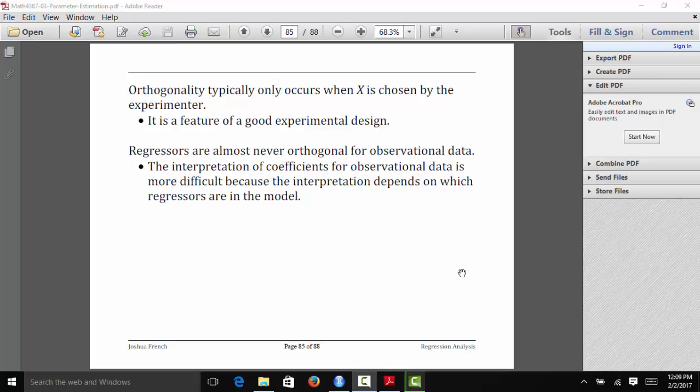Orthogonality only occurs when X is chosen by an experimenter. It never really happens for observational data. But if you're designing an experiment, then you can actually design the experiment to have orthogonal regressors, and that's a really good property to have.